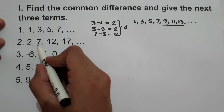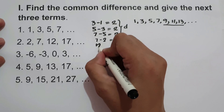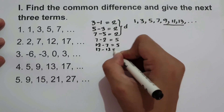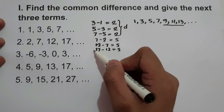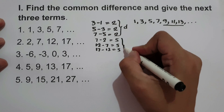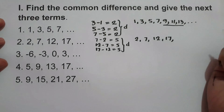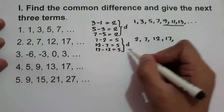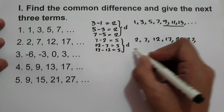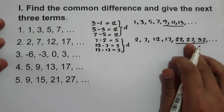What about number 2? We have 2, 7, 12, 17. Let's find the common difference: 7 minus 2 is 5, 12 minus 7 is 5, and 17 minus 12 is 5. By the way, you don't need to subtract every term — just simply subtract the second term from the first term to get d. So the common difference is 5. The next three terms are: 17 plus 5 is 22, 22 plus 5 is 27, and 27 plus 5 is 32. So the next three terms are 22, 27, and 32.